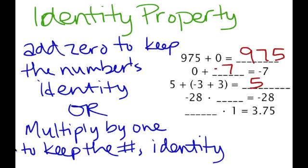With negative 28, if we want to keep that same identity and we're multiplying, any number times 1 keeps that same value. So the identity property means keeping your same identity or same value, not changing that number's value. We can do that by adding 0 or by multiplying by 1.